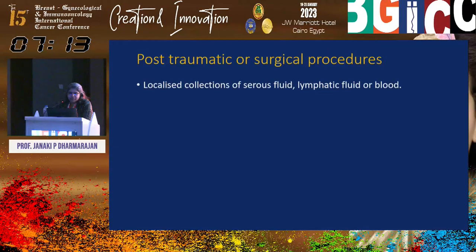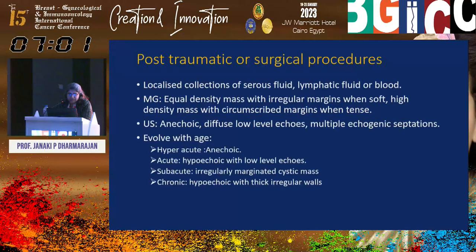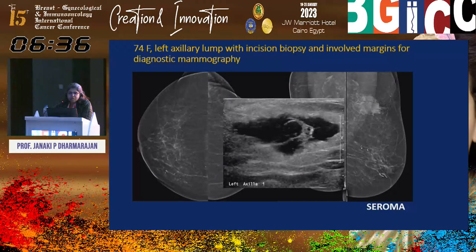Post-traumatic surgical procedures can cause localized collections of serous fluid, which can be lymphatic or bloody. On mammography, a soft collection appears as an equal-density mass with irregular margins; when firm, it appears as a high-density mass with circumscribed margins. The hematoma collection evolves with age: anechoic when hyperacute; hypoechoic with low-level echoes in the acute phase; regularly marginated cystic spaces in the subacute phase; and hypoechoic with thick walls when chronic.